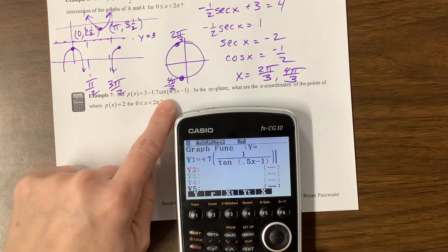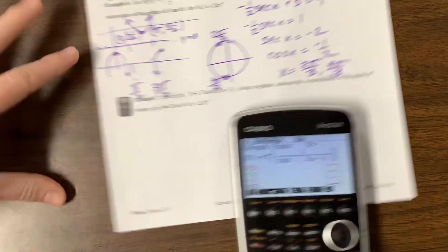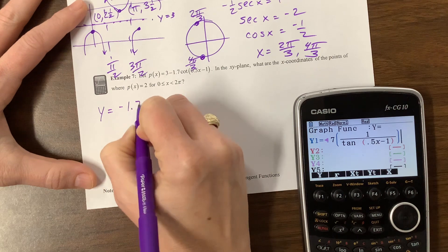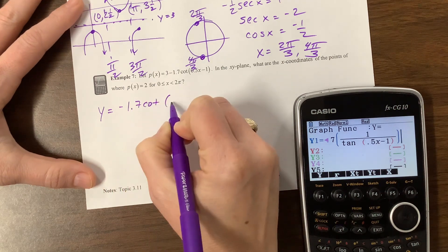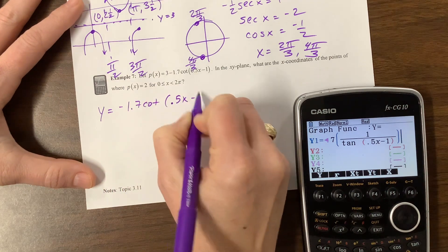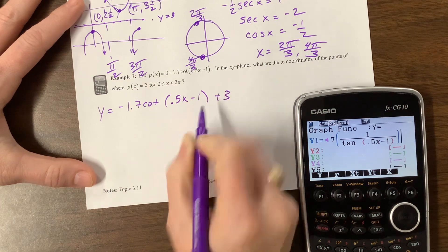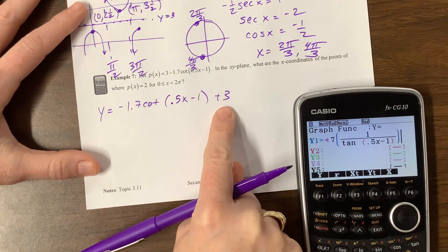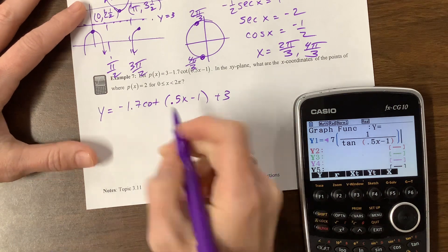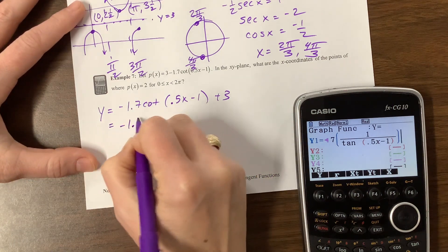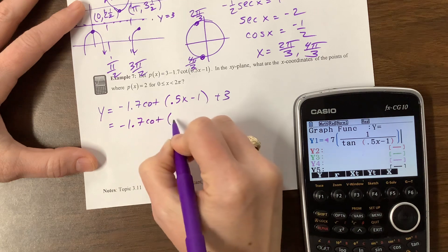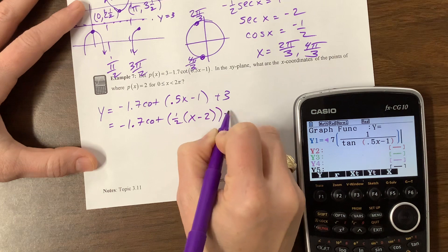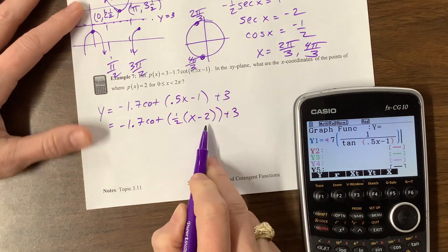What do I expect this to look like? I expect, okay, so if I have y is equal to negative 1.7 cotangent of 0.5x minus 1 plus 3, I expect my inflection point to move up 3. I expect everything, let's rewrite this. This would be negative 1.7 cotangent. I can factor out a 1 half, and so then this becomes minus 2 plus 3.